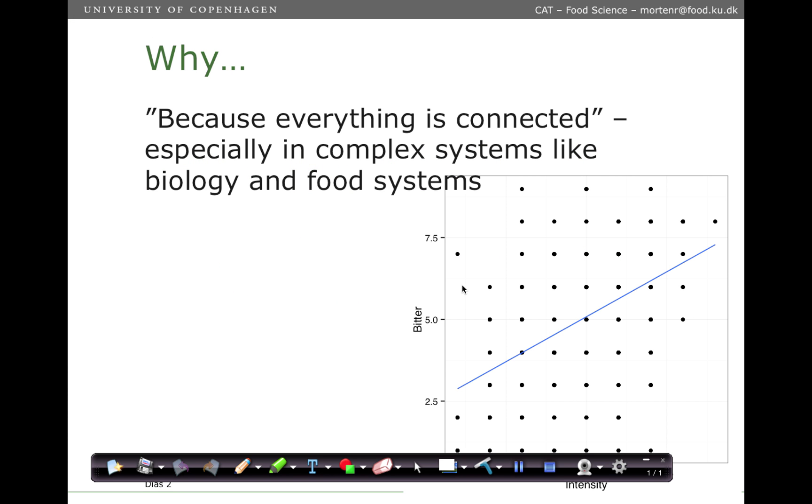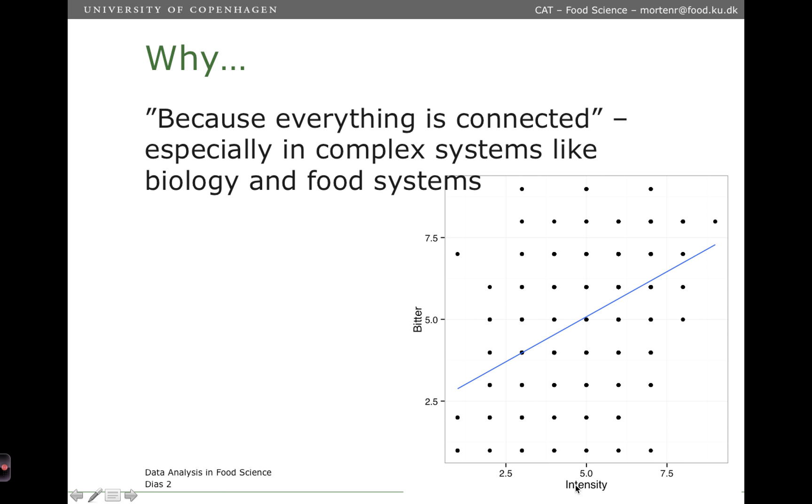So why should we at all bother talking about covariance or correlation? Well, because most of the systems that we look at in food science are complex biological systems. And when you measure complex biological systems, there will be features going up and down together. For instance, in this plot, we see the intensity and the bitterness of coffee samples, and we see that they follow, to some extent, a trend line. We say that these two features are correlated.